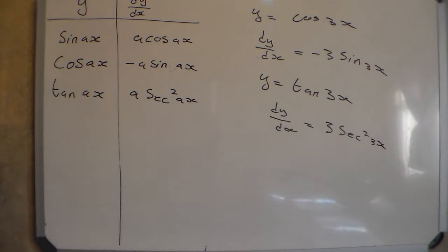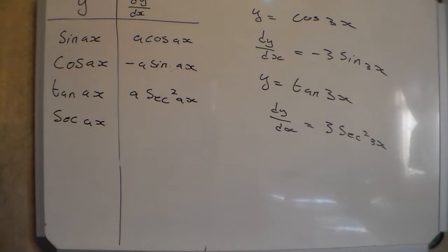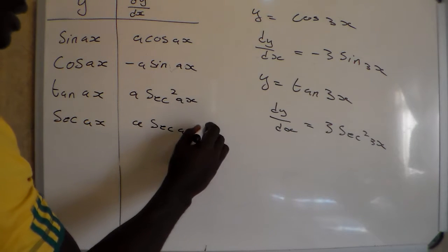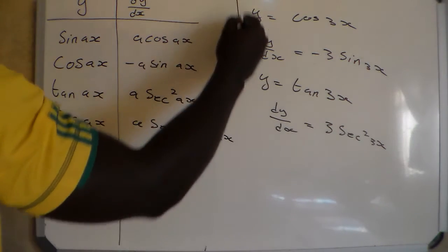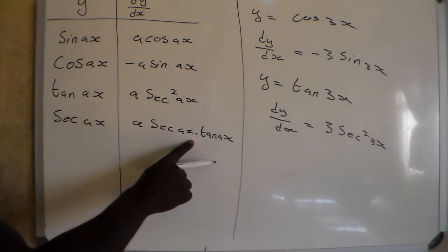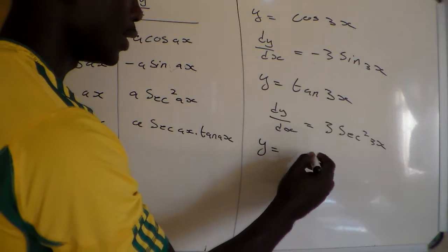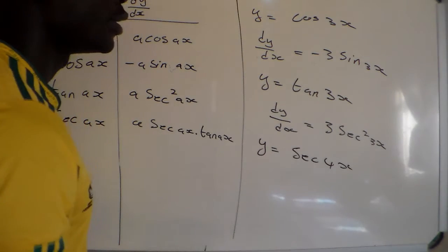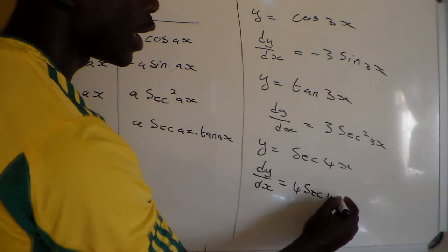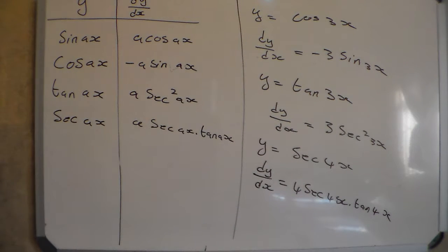Then this one is the derivative of sec. If we have sec(AX), the derivative of sec(AX) is going to be A·sec(AX) multiplied by tan(AX). For example, if we derive Y equals sec(4X), then the derivative of this will follow that rule.